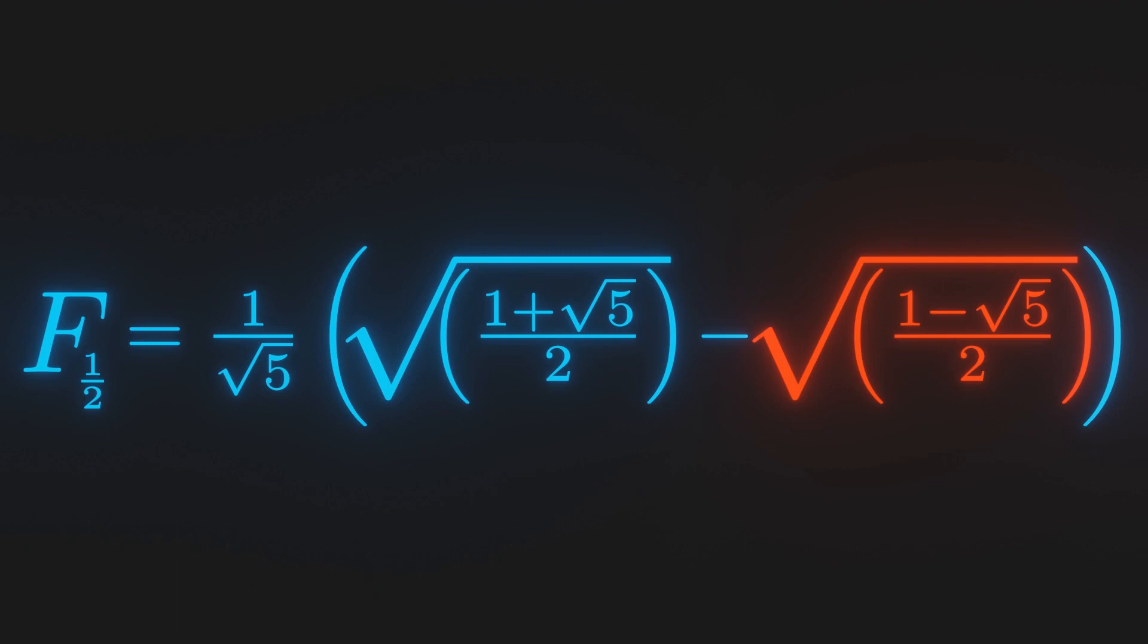So earlier, we couldn't see the outputs because the results were complex, but complex numbers required two dimensions. To plot this on a two-dimensional graph, we can have one axis represent the input, and the other axis will represent the absolute value of the output, which is the distance from zero.